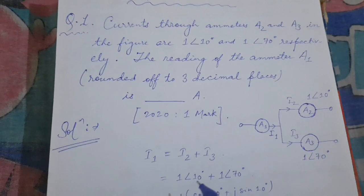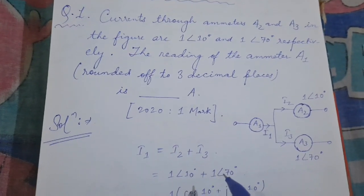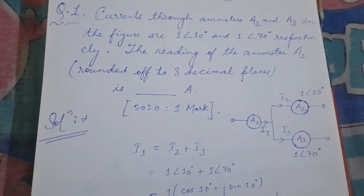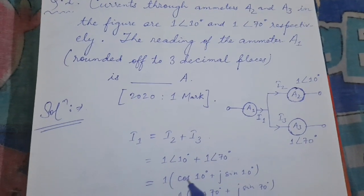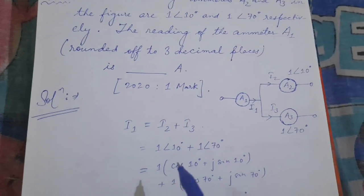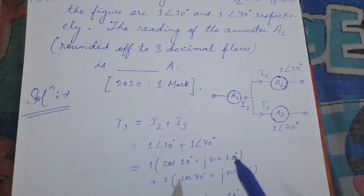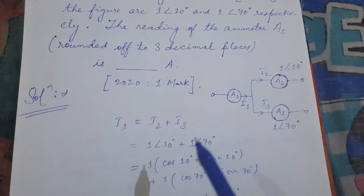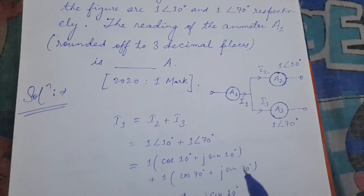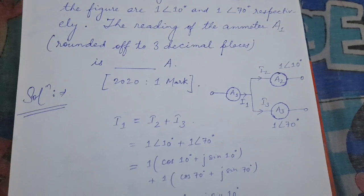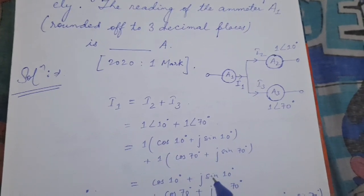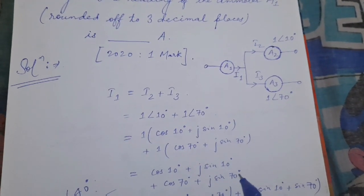So what will I1 be? 1 at an angle 10 degrees plus 1 at an angle 70 degrees. This is in polar form, and we need their summation. So we will convert this to trigonometric form. We can write: 1 into (cos 10° + j sin 10°), and similarly, plus 1 into (cos 70° + j sin 70°). This equals cos 10° + j sin 10° + cos 70° + j sin 70°.